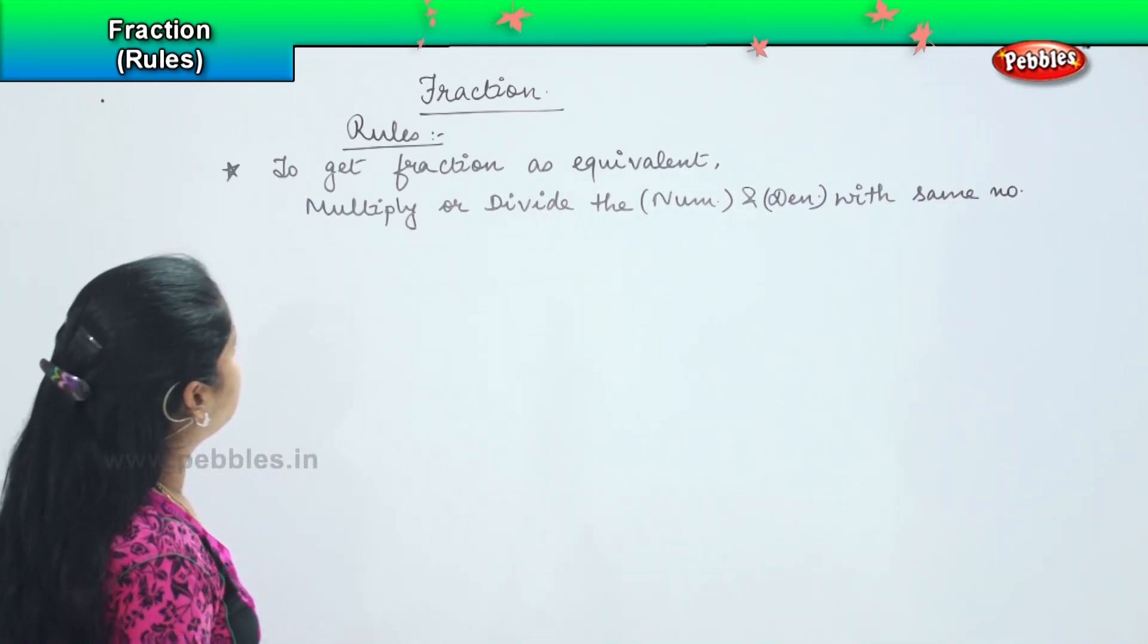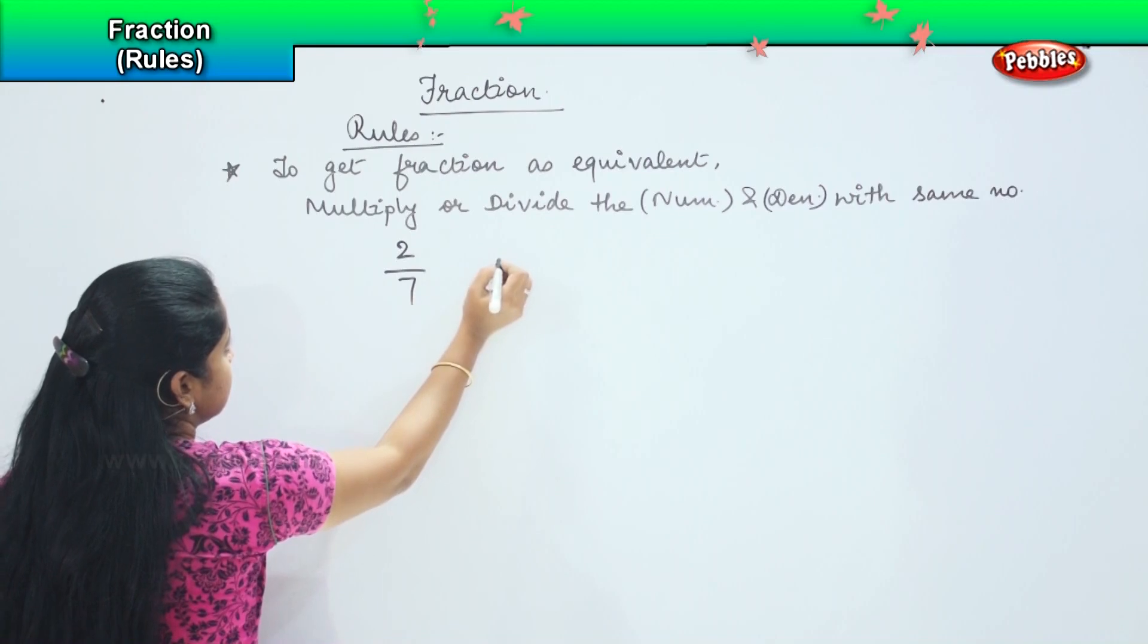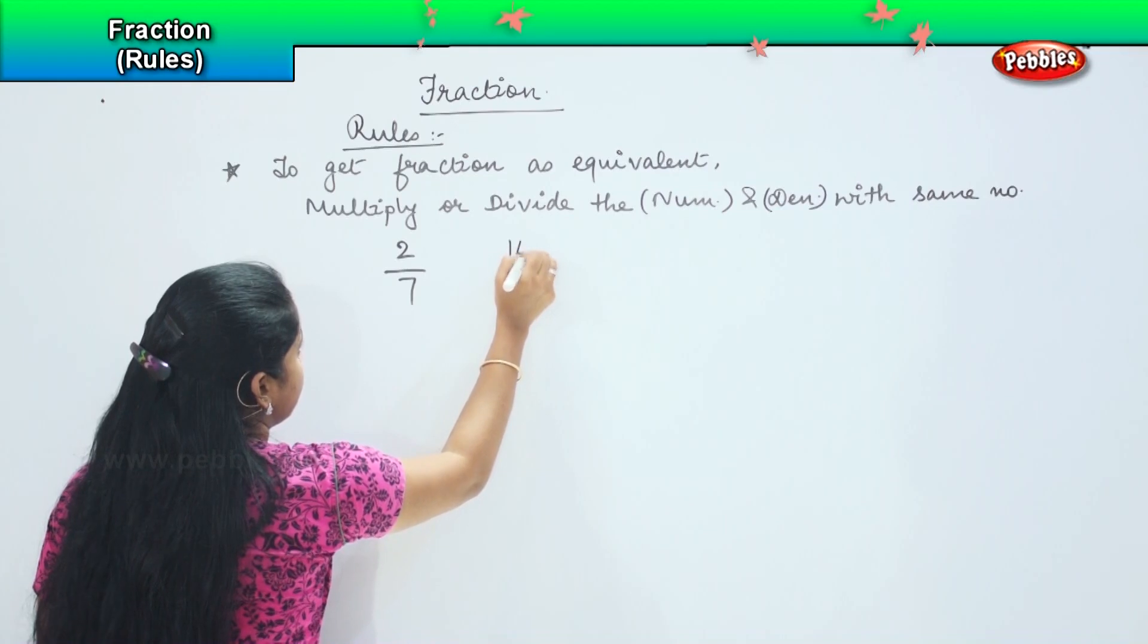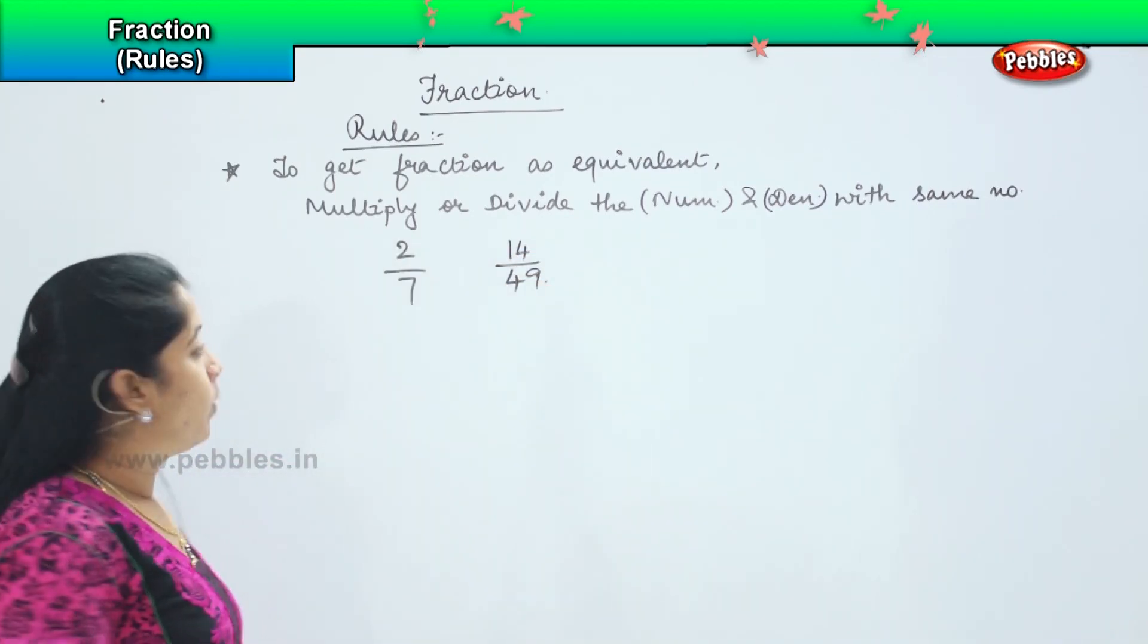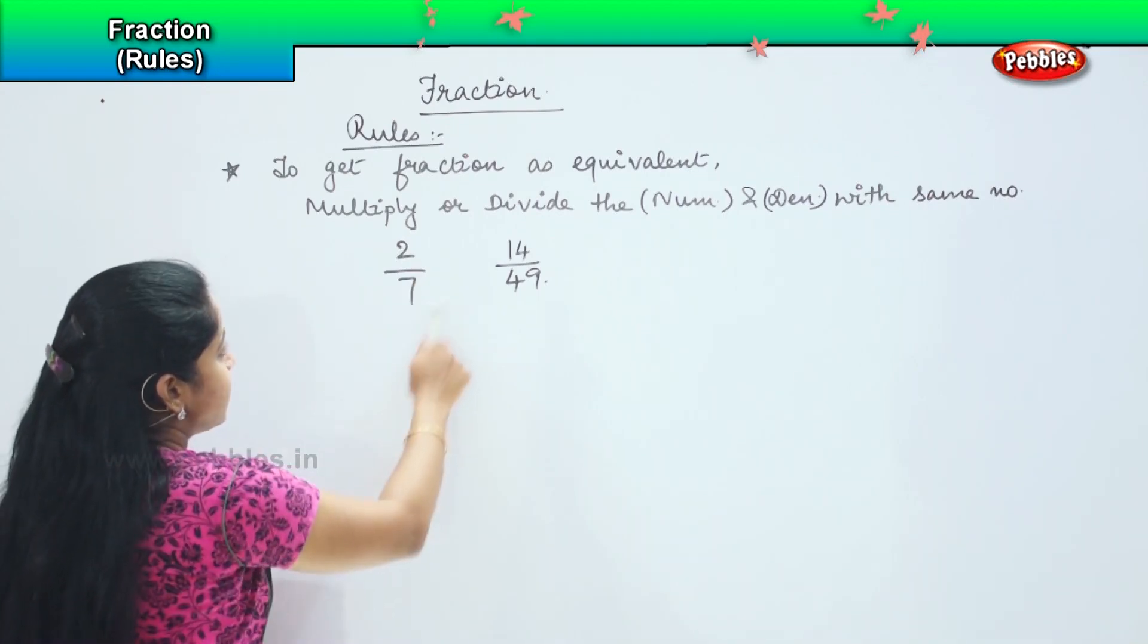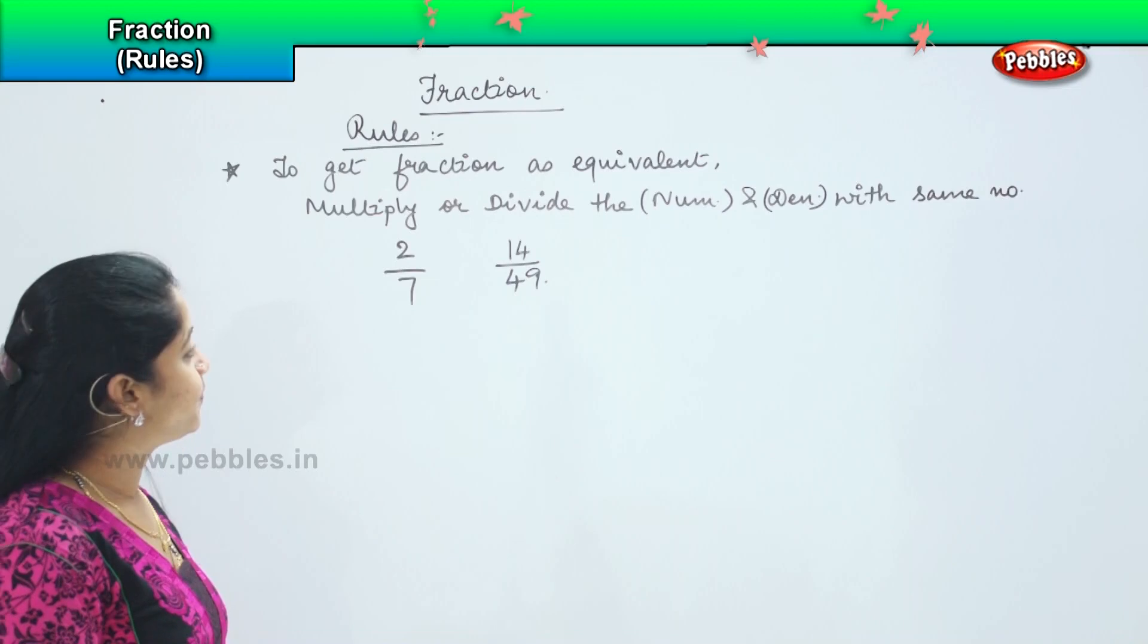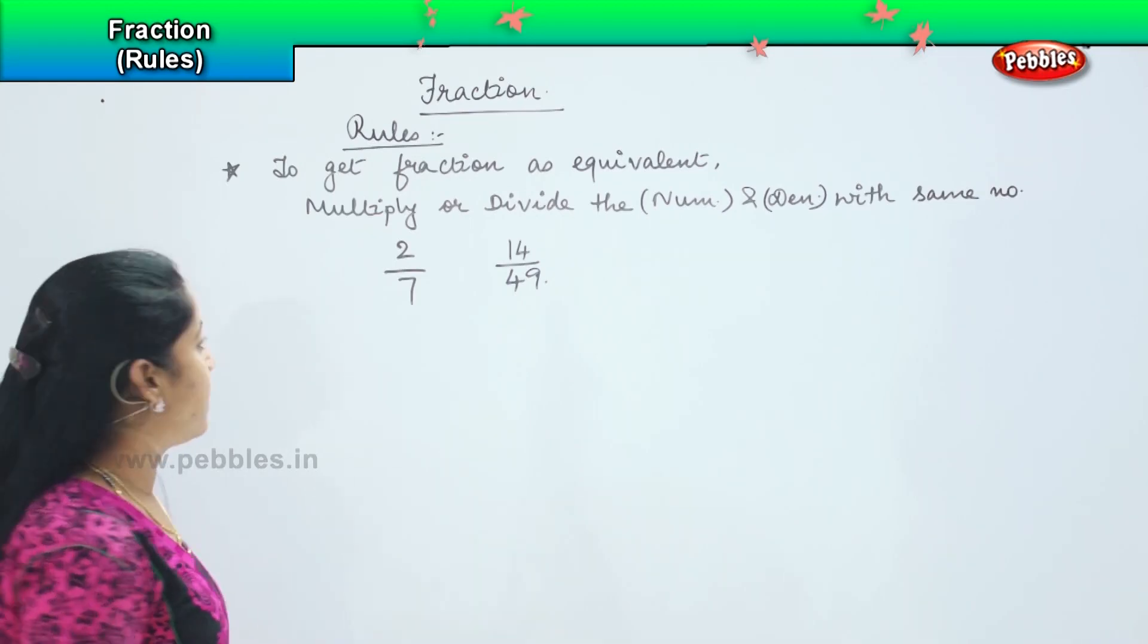For example, if I want to get say 2 by 7 and for example 14 by 49. If I want to make this 2 by 7 equal to 14 by 49, what do I have to do? I need to multiply or divide with the same number.